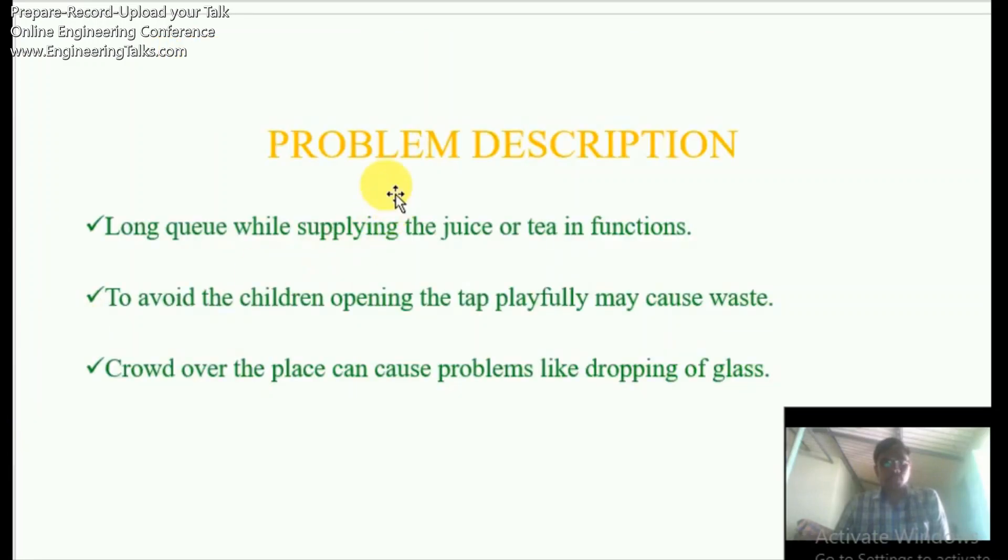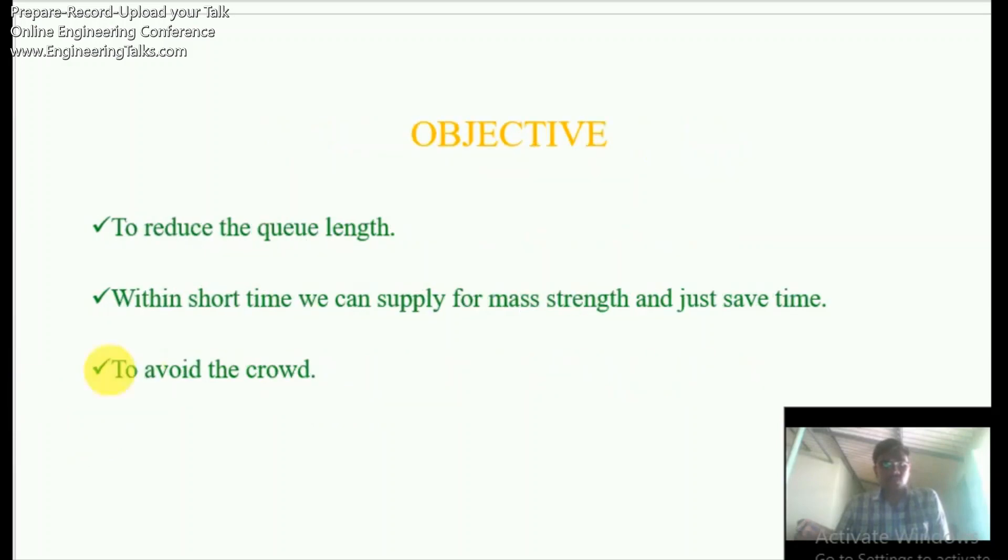Problem description for designing multi-tap drum system: Long queues form while supplying tea or juice in functions. To avoid children opening the tap playfully and crowds dropping glasses. Objective is to reduce the queue length with shorter supply time of tea or juice, to save time, and to avoid crowds.